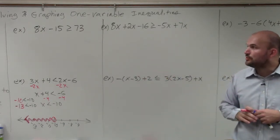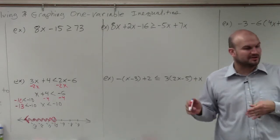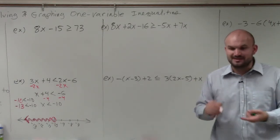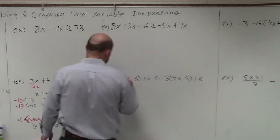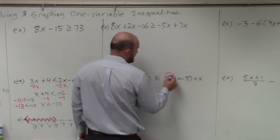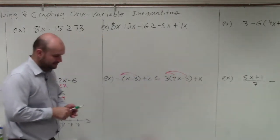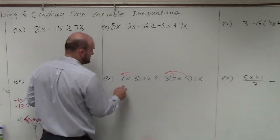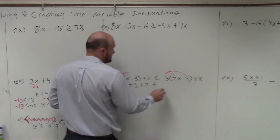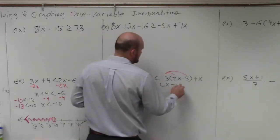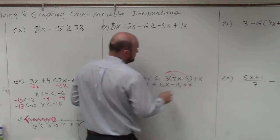The first step is assemble both sides of your inequality. I didn't tell you to write this down this time, but basically what that means is apply distributive property when you can and then combine like terms. So the first thing we're going to do is apply distributive property. When we do that, we now obtain negative x plus 3 plus 2 is less than or equal to 6x minus 15 plus x. Everybody follow that step?